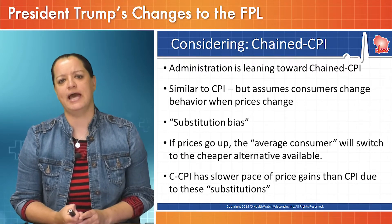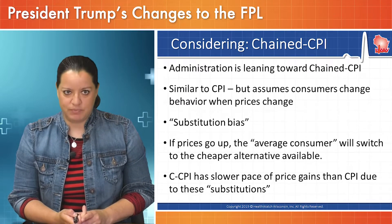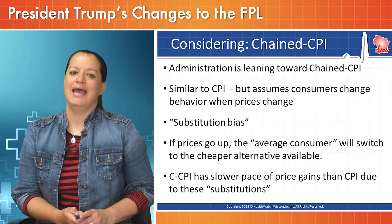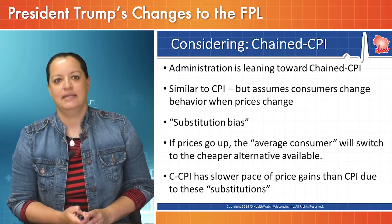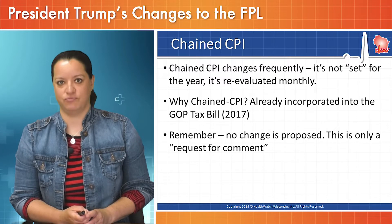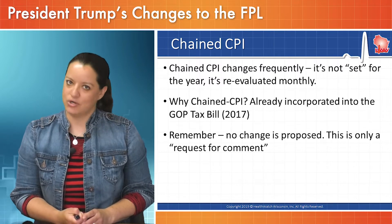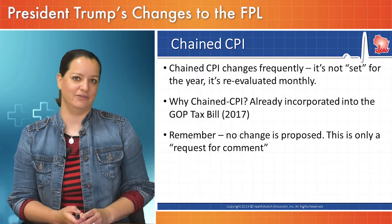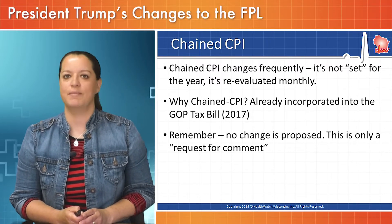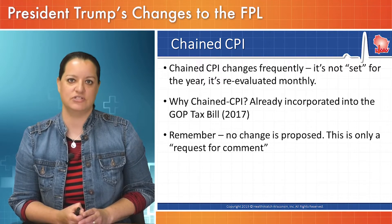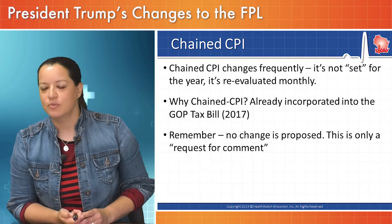So it's looking at the average consumer and what they might do if prices increase. Because of this substitution bias, the Chained CPI has a slower pace of price gains than the typical Consumer Price Index. It also changes quite frequently — economists do a monthly snapshot to determine what the average consumer might do. That raises the question: how might this work for determining eligibility for public benefits programs? It might be logistically impossible unless they determine some other snapshot to average out these costs.